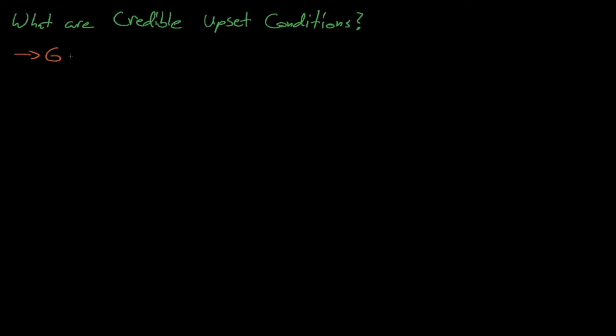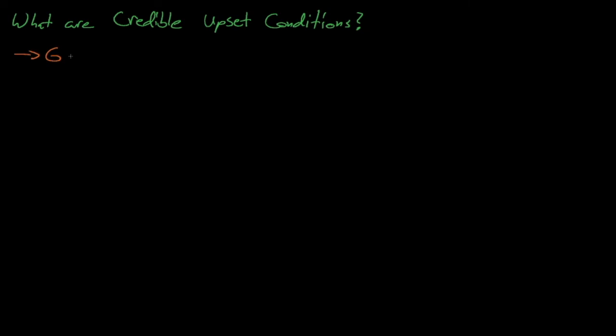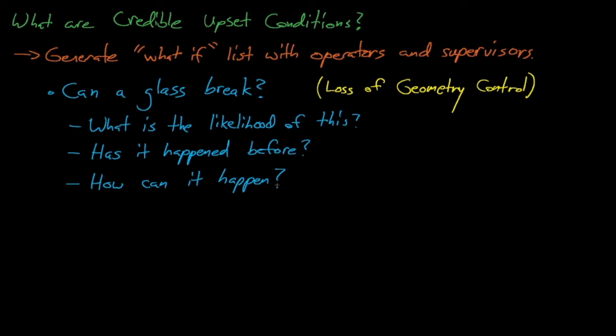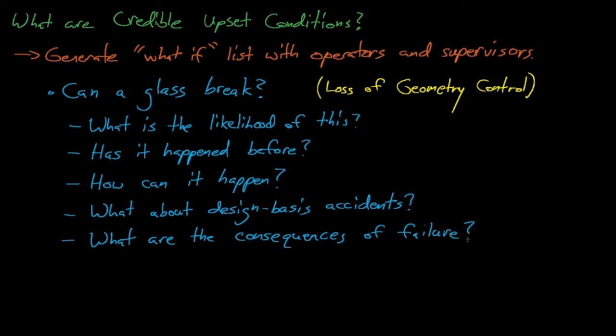So what constitutes a credible upset condition? Consulting with the facility's operators and their supervisors is perhaps the most effective way of determining what an operation's credible abnormal conditions are. When doing this, it's helpful to run through a what-if list to see what could go wrong at different times throughout the operation. For example, we might start asking if a glass can break to cause a loss of geometry control. We might ask, what is the likelihood of the glass breaking? Has it ever broken before? How can the glass break? Are there any events that might cause the glass to break and could cause other changes to process conditions as well, such as a rack of fissile material containers tipping over and falling onto the glass container? Also, are there any design basis accidents, such as an earthquake or a tornado or a hurricane, that could change these process conditions? And what is the consequence of the failure? What happens if the glass vial breaks? And does the rate of failure matter? A water main that leaks a couple of drops of water each day isn't going to affect our moderation control anywhere near the extent as a double-guillotine waterline break.